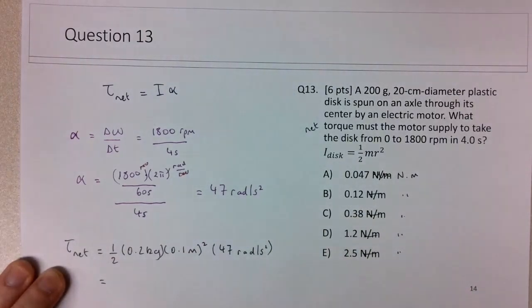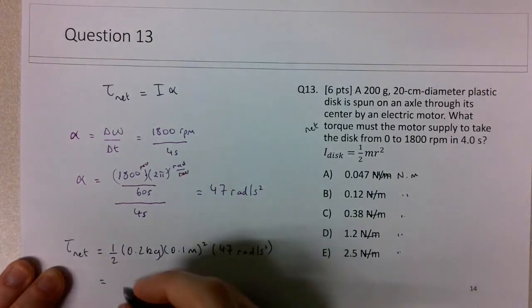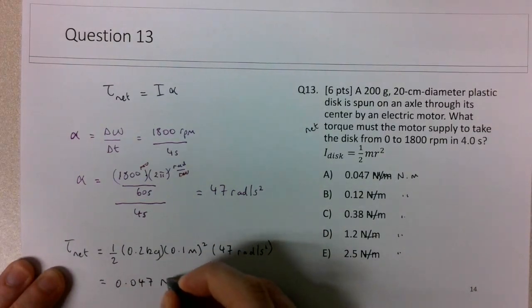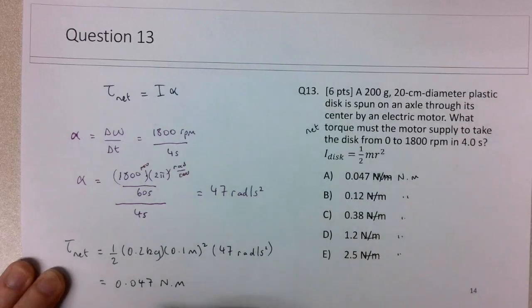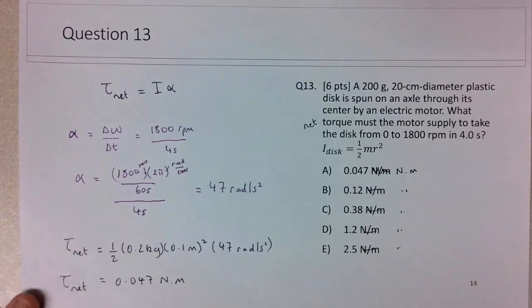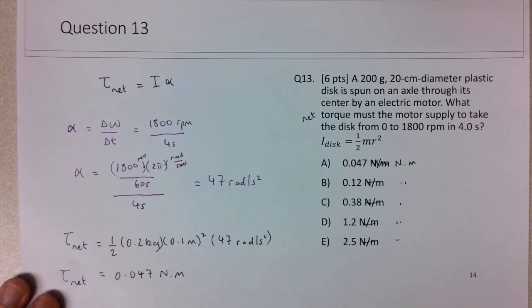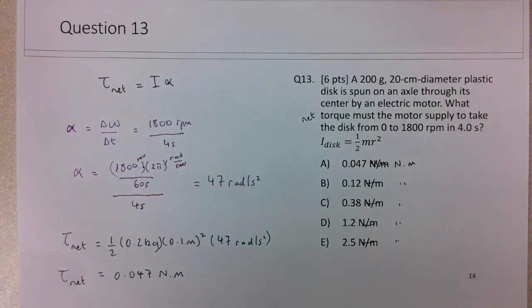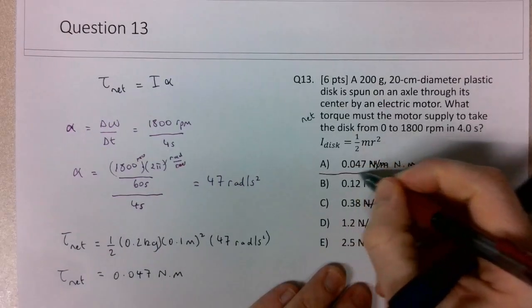And this should give you the answer: 0.047 newton meters. So again, making a note there, the units I have in the printed slide here. But those changes should be made already on the PDF. So it should give you choice A as the correct answer.